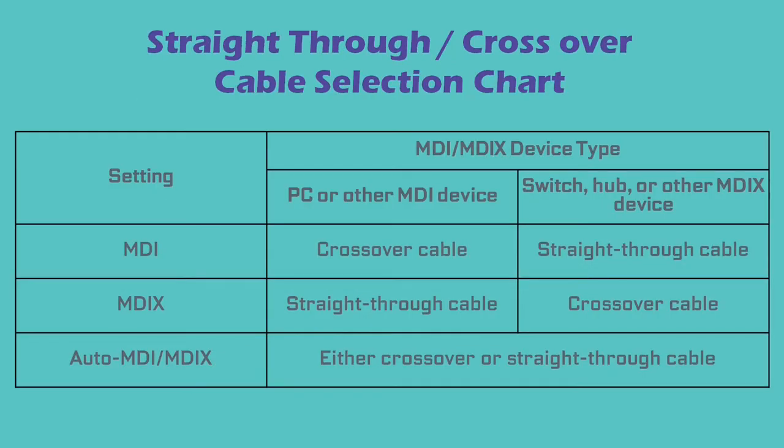This table summarizes which type of cable is used in which situation. If we need to connect MDI to MDI, or MDIX to MDIX — that is, similar ports on both sides — a crossover cable will be needed. If we want to connect an MDI to an MDIX port, a straight-through cable will be required. And, as long as one side has an Auto MDIX port, any kind of cable will be sufficient for communication.